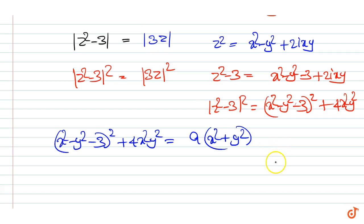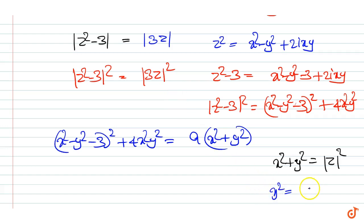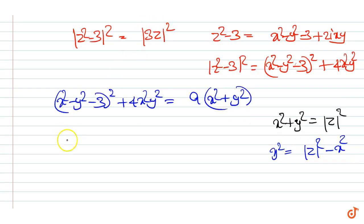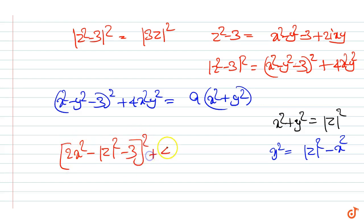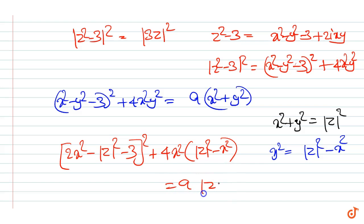Now, let x² + y² = |z|². Therefore y² = |z|² - x². Substituting we get: (2x² - |z|² - 3)² + 4x²(|z|² - x²) = 9|z|².